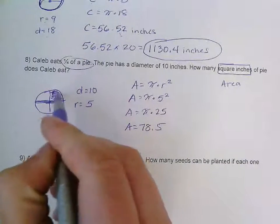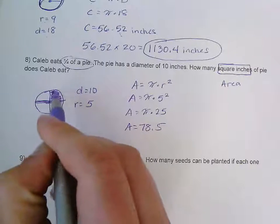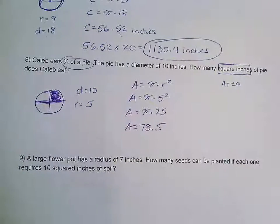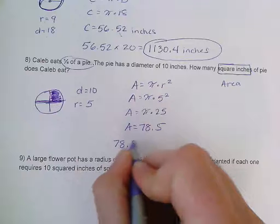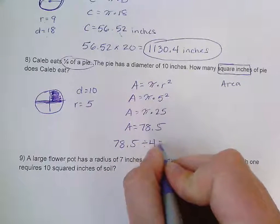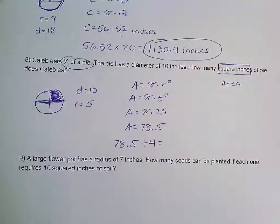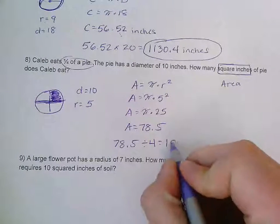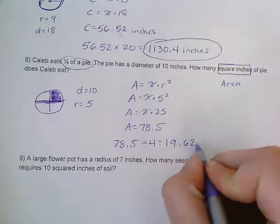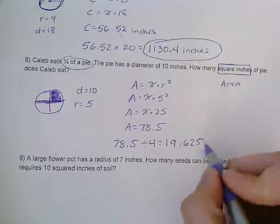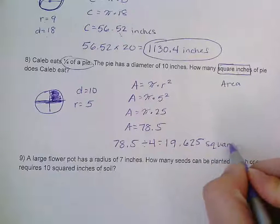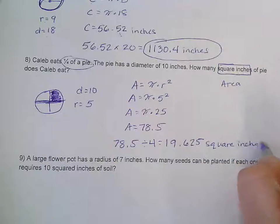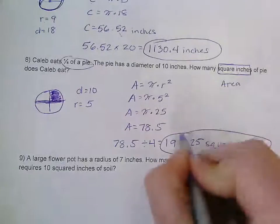The thing is, I only want to know one fourth. And so since this pie has been split into four parts and I want to know one of them, I'm going to take 78.5 and I'm going to divide by four, because that's going to give me one fourth. So that means that my answer is 19.625 square inches.